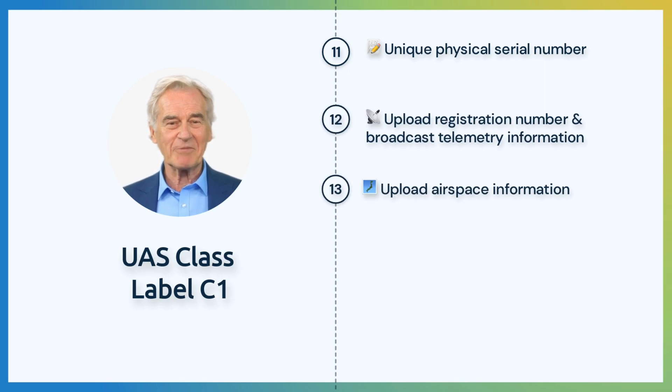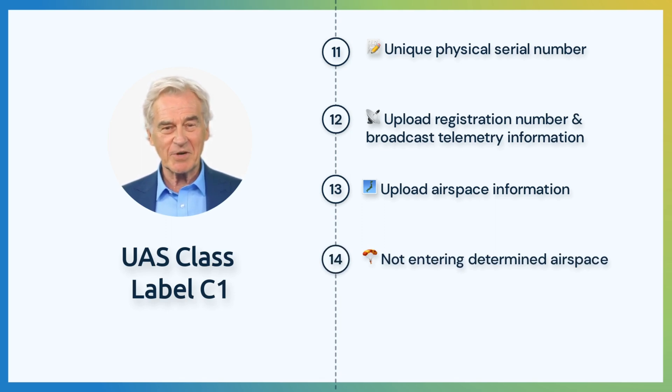The UA shall be able to upload airspace information by the operator. Additionally, the system shall be able to warn the pilot when a breach in unauthorized airspace takes place. Entering determined airspace shall not be possible for the UA. This limit shall be imposed smoothly without adversely affecting the flight operation.